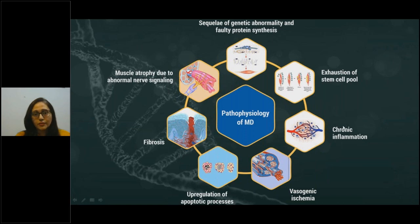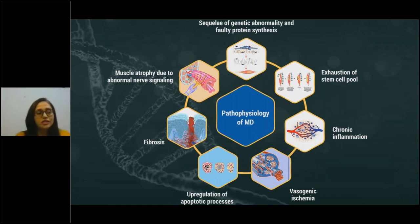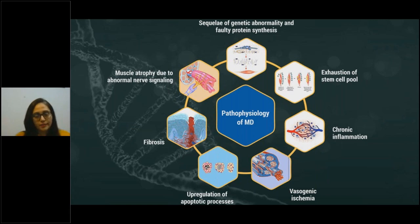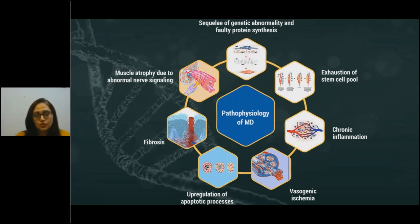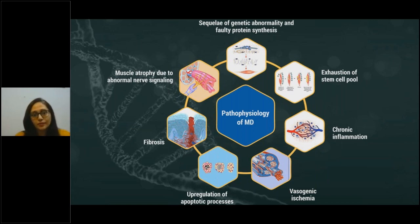Chronic inflammation means that whenever there is damage or injury, the body repairs that part using inflammation — which is essential to start the repair process. Because there is continuous injury to muscles in these children, the inflammation in the body is also chronic. Unchecked inflammation has negative consequences: while inflammation is a process of repair, it also damages surrounding quality tissue, so chronic inflammation also hampers the health of healthy muscle tissue in these children.